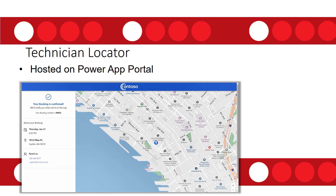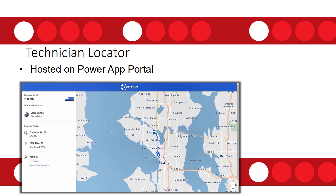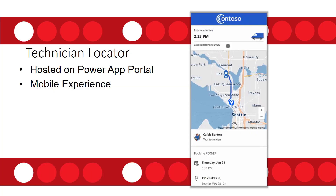This feature is currently in preview, and I'm going to write a separate article and do a separate video with more details. This is a screenshot of what it looks like on a tablet or PC — you'll be able to see that little car on the screen move as the technician is driving, so customers can track that progress. The same notification or form also displays on mobile, just looking a little different due to screen real estate.